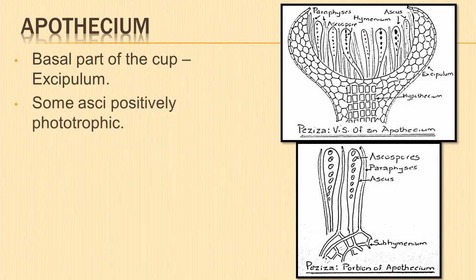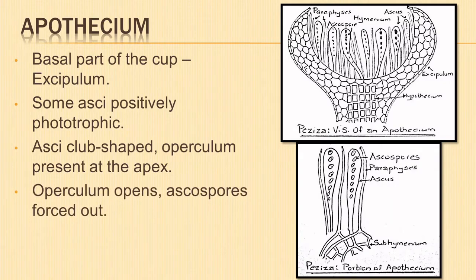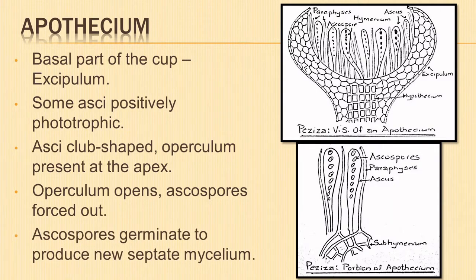The asci near the margin of the cup bend towards the source of light, since they are positively phototropic. The asci are club-shaped with a lid-like operculum hinged at the apex. The top portion of mature asci project above the level of hymenium. The lid of the ascus opens at the apical pore and the ascospores explode. The ascospores on germination produce a new septate mycelium.